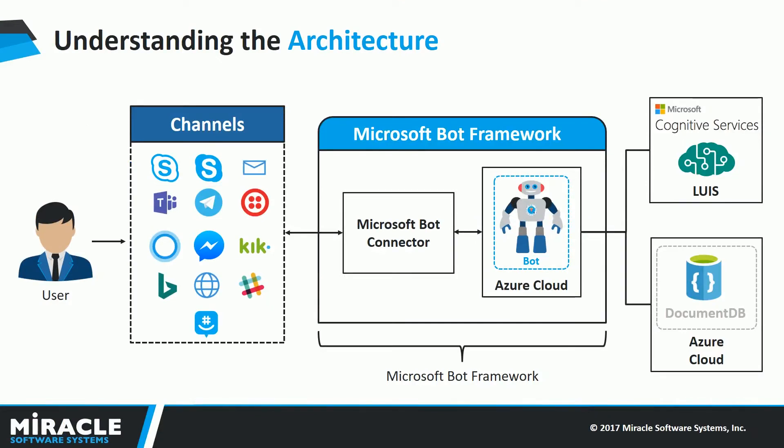When a user wants to make a request to EDWORD, they have to choose a channel first. A channel in this context is the mode of communication between the user and the bot. EDWORD is capable of offering its services over a wide range of channels, namely Slack, Skype, Facebook Messenger, and many more. Once the user decides the channel and makes a request, the message is first sent to the Microsoft Bot Framework, which behaves as a message broker.